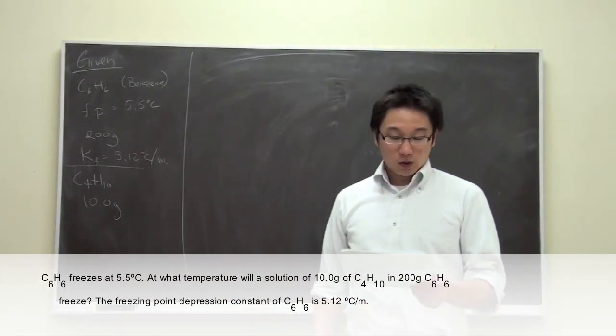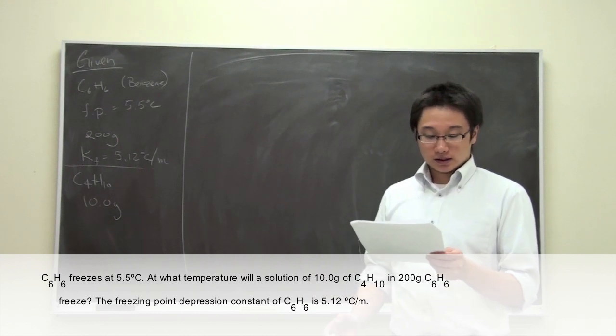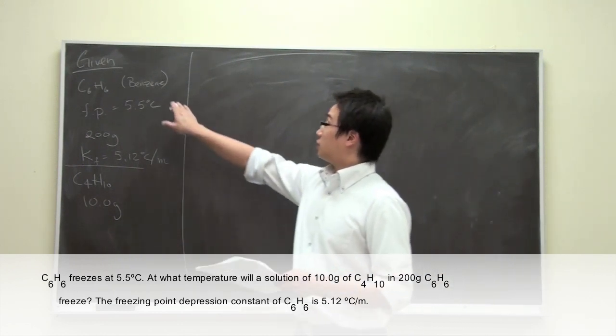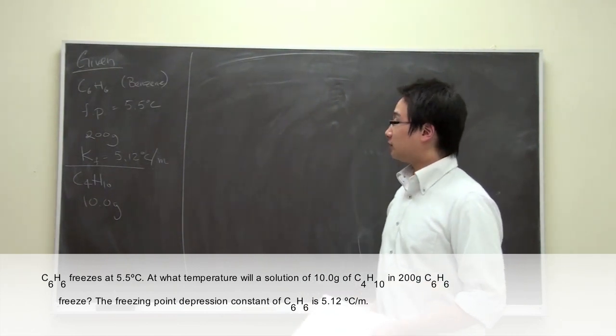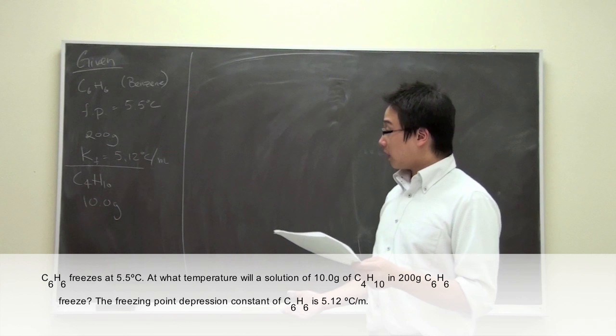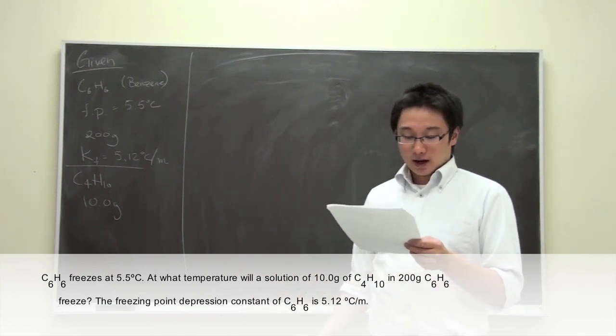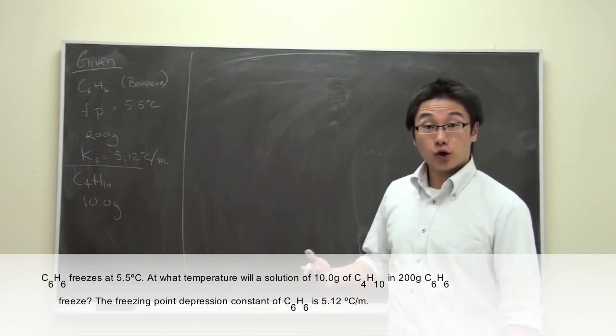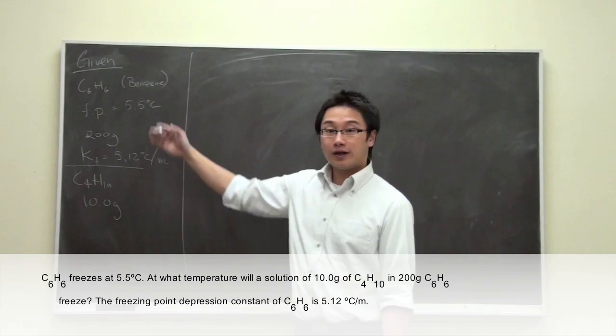This is question three on worksheet number three. It says C6H6, also known as benzene, freezes at 5.5 degrees Celsius. We have 200 grams of benzene and 10 grams of butanol. We would like to find out what is the new freezing point if we put these two together.